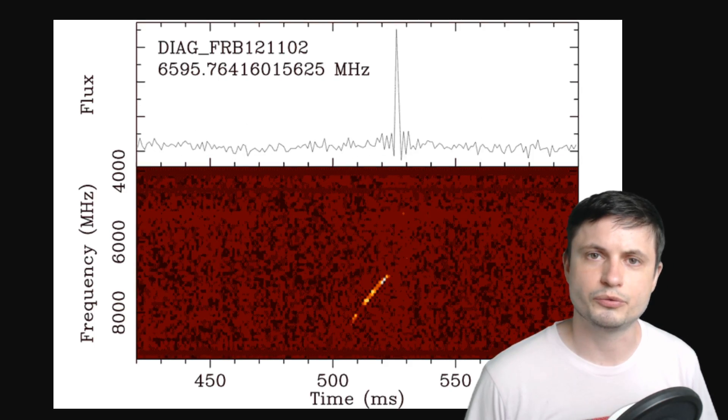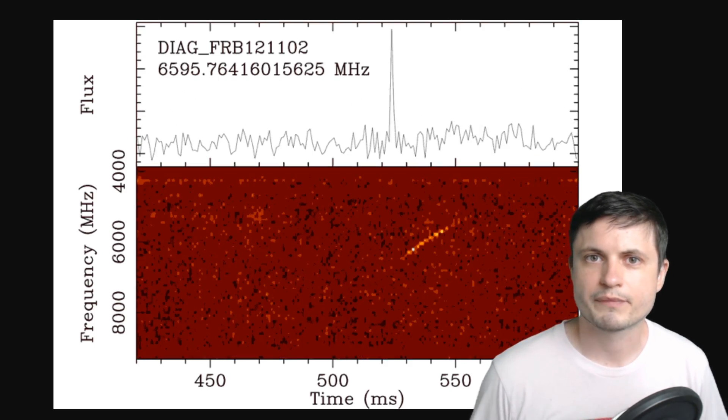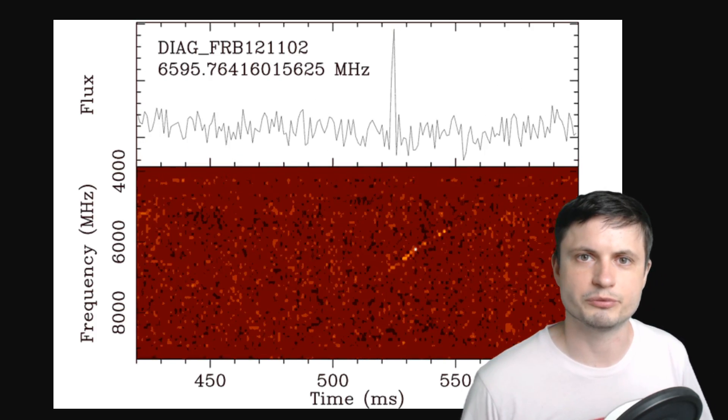something extremely powerful must have created them for them to be detected on our planet. They also generally differ just enough to be natural signals, so today we know it's definitely not aliens. But at the same time we still have no idea what's causing them because of all of these unusual differences we're observing.